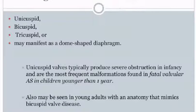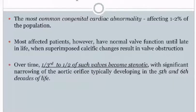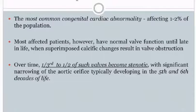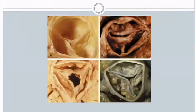Congenital aortic valve disease may be unicuspid, bicuspid, tricuspid, or manifest as a dome-shaped diaphragm. Unicuspid valves typically produce severe obstruction in infancy and are the most frequent malformations found in fatal valvular aortic stenosis in children younger than one year. Bicuspid aortic valve is the most common congenital cardiac abnormality, affecting 1 to 2% of the population. Most affected patients have normal valve function until late in life, when superimposed calcific changes result in obstruction, with one third to half of such valves becoming stenotic — typically in the 5th and 6th decades of life.